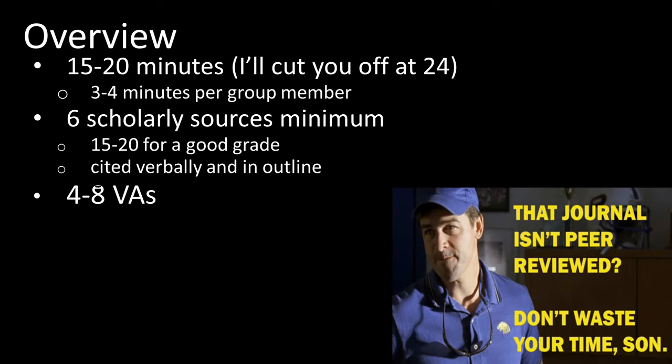The presentation itself should have at least six scholarly sources. That being said, six scholarly sources will probably score you a C. So if you're looking for an A, you want to aim for 15 to 20 good sources to get that grade. You're going to be putting an outline together with APA parenthetical citations for those sources, and you should also be saying those sources out loud to your audience. In addition to all that research, you're also going to have four to eight visual aids.